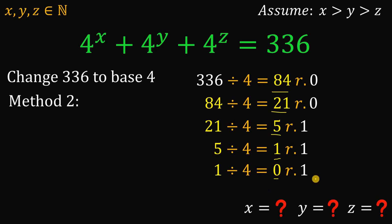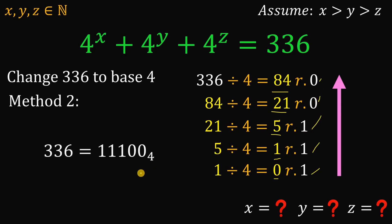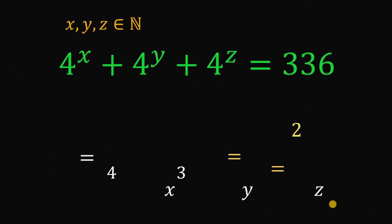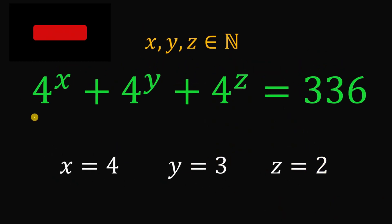Now, reading the remainders from bottom to top: 1, 1, 1, 0, 0 — that is the base 4 representation of 336. It also follows that 336 can be written as 4 raised to the fourth power plus 4 cubed plus 4 squared. So x equals 4, y equals 3, and z equals 2. And this is our answer to this question.